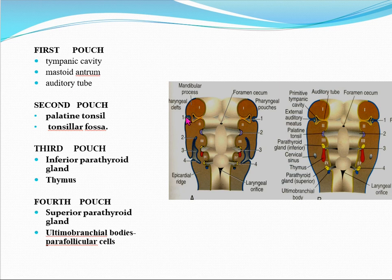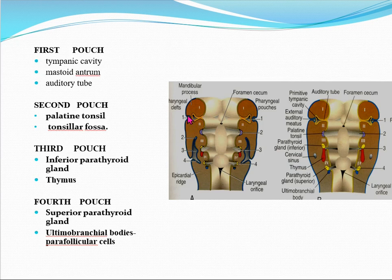Here you can see the endoderm and the ectoderm come very close to each other, with a small streak of mesoderm in between. This portion ultimately transforms into the tympanic membrane, which is embryologically derived from all three layers: endoderm, ectoderm, and mesoderm.